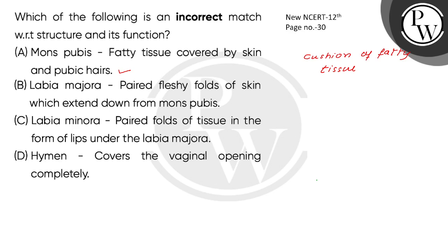Covered by skin and pubic hairs — this is correct. Labia majora is a fleshy fold of tissue. It extends down from the mons pubis and surrounds the vaginal opening.